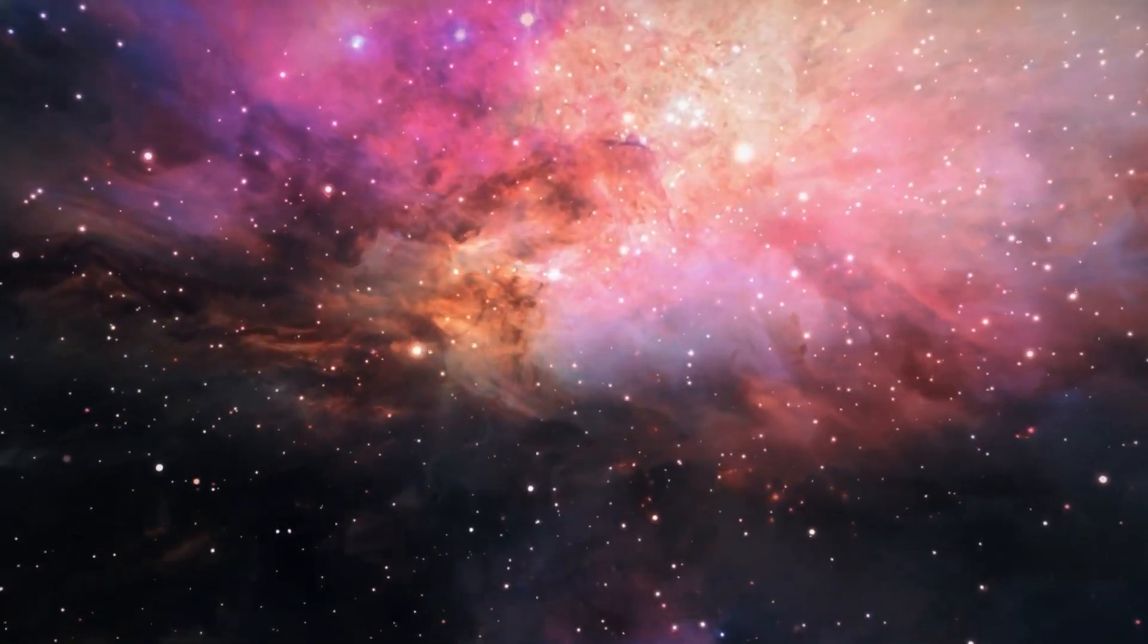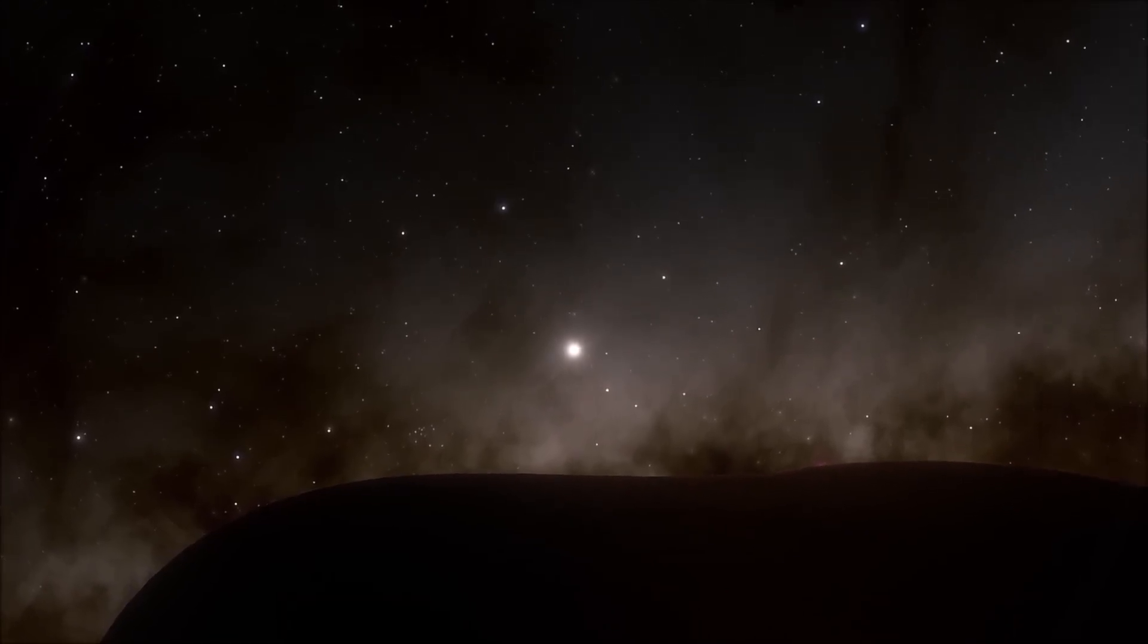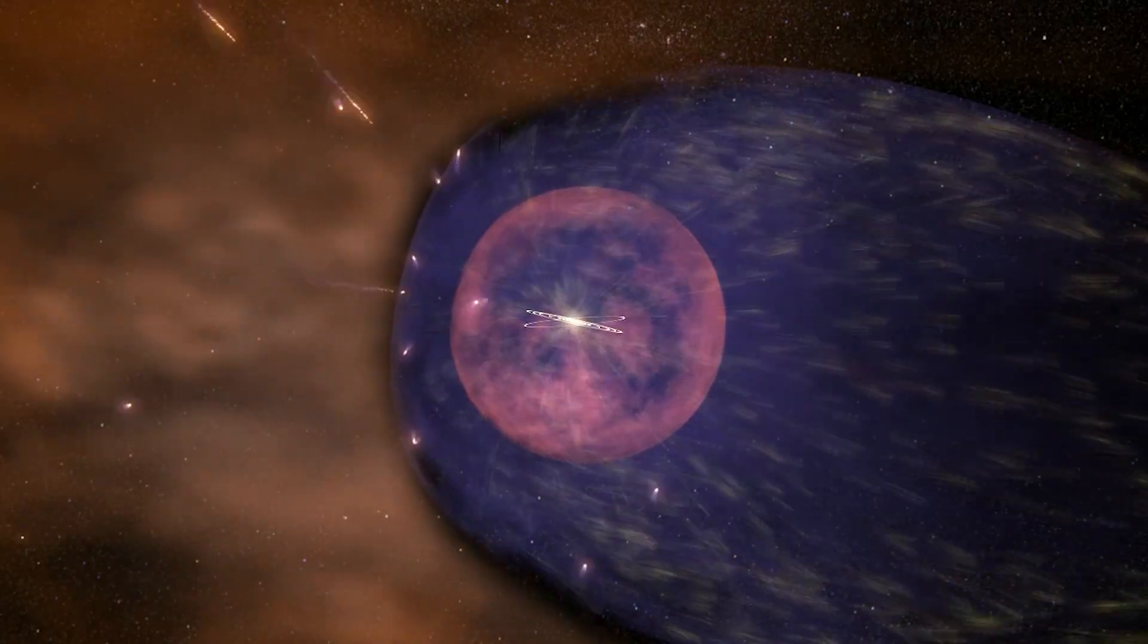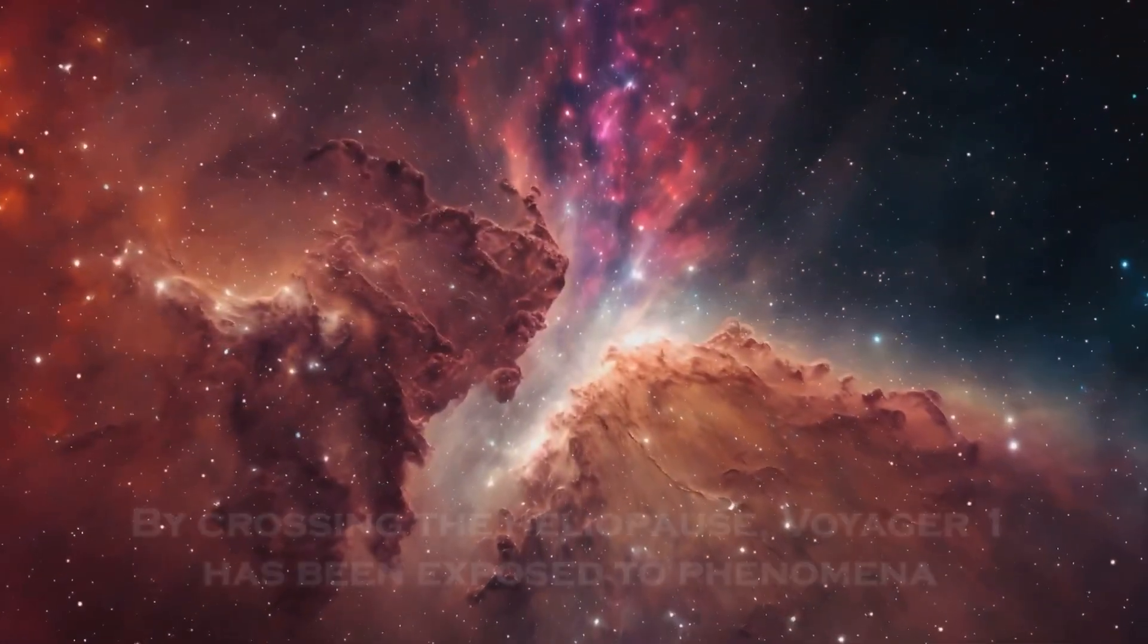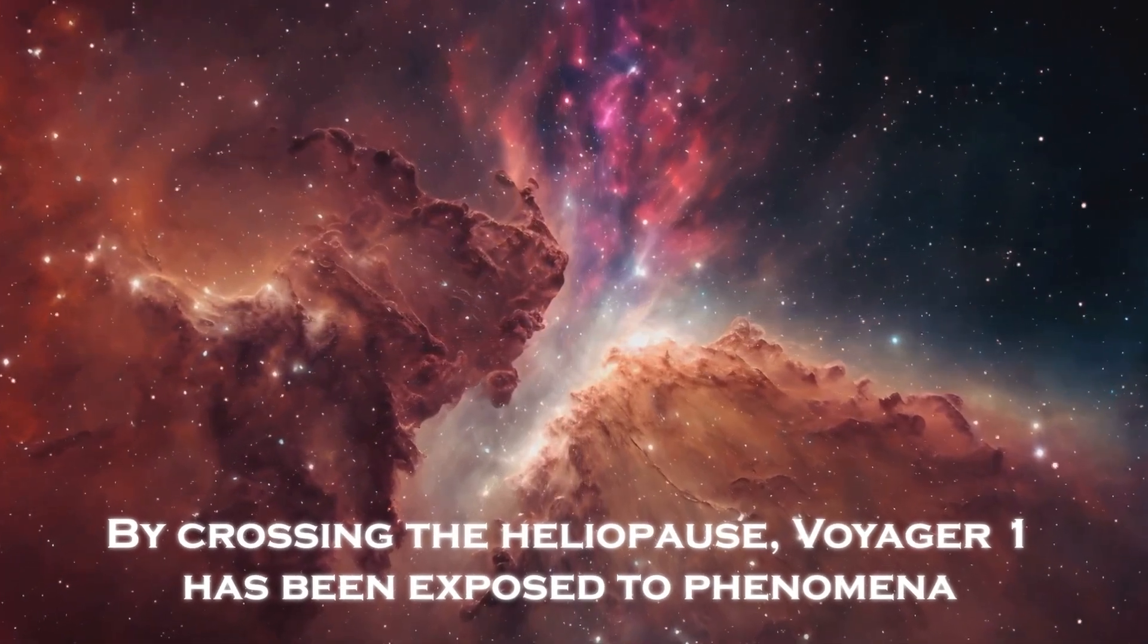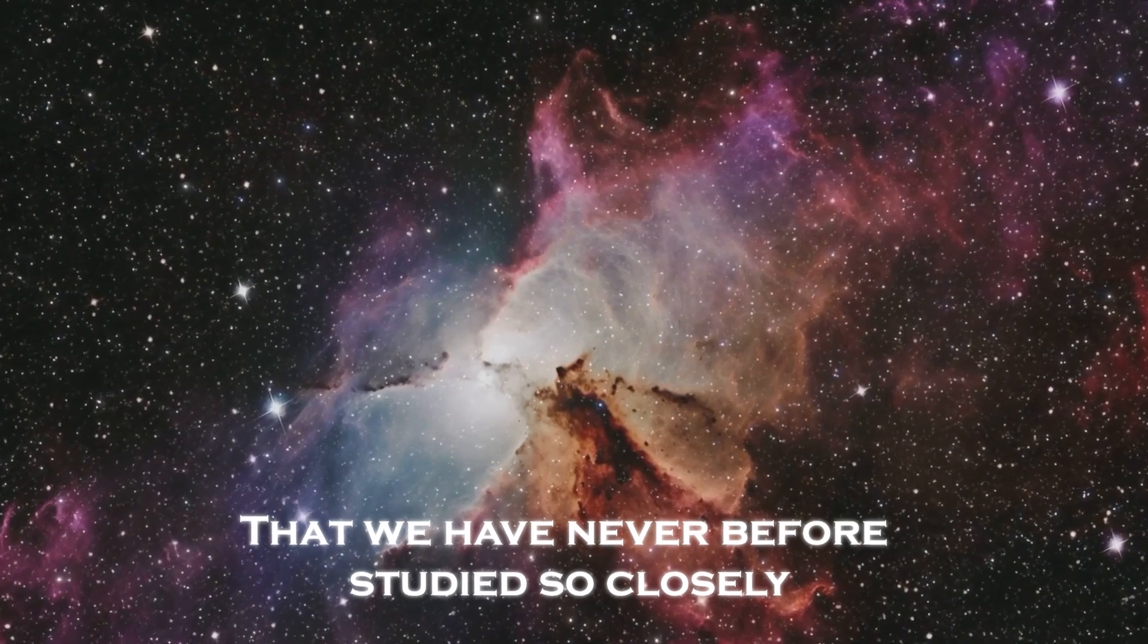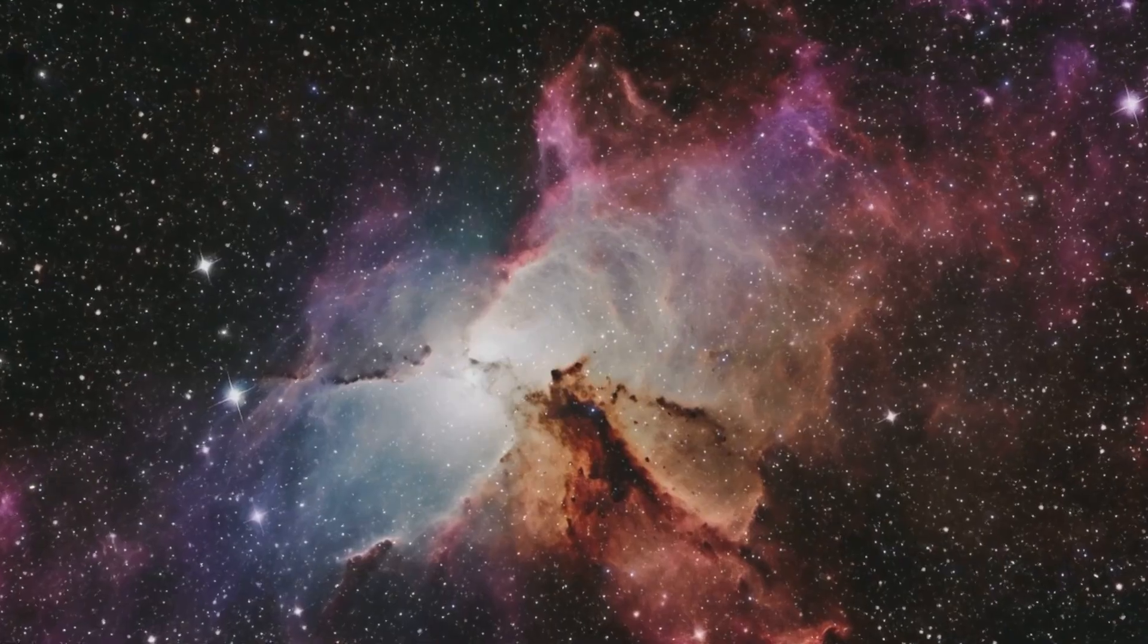But what does it really mean to cross this boundary? What lurks on the other side? The Heliopause, a protective bubble created by the solar wind, keeps us safe from many dangerous particles coming from the galaxy. But by crossing the Heliopause, Voyager 1 has been exposed to phenomena that we have never before studied so closely. Phenomena that today seem to defy our laws of physics.